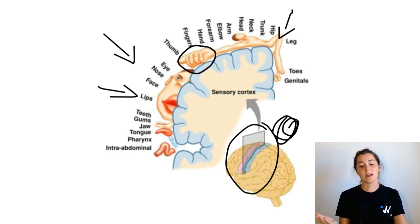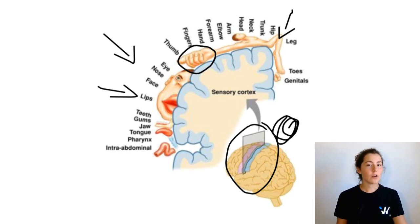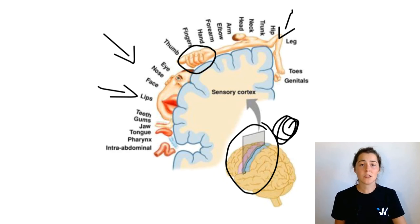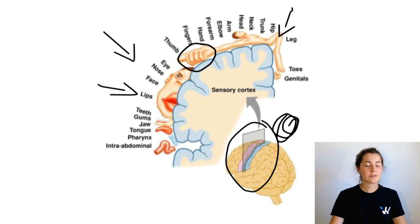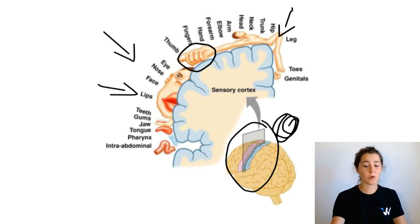Whereas the hip and the leg are not as sensitive, so they don't take up as much space within the cortex. What we see here in this picture is the somatotopy of a normal human with normal functions of their body.